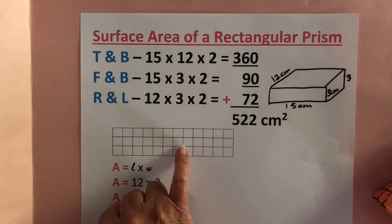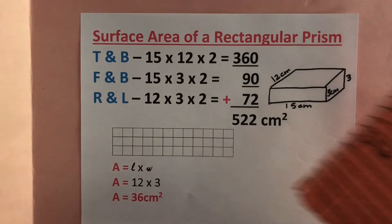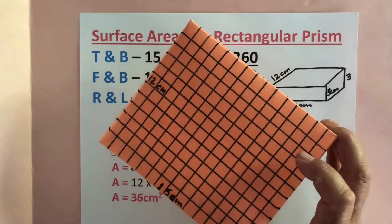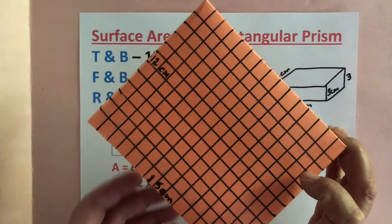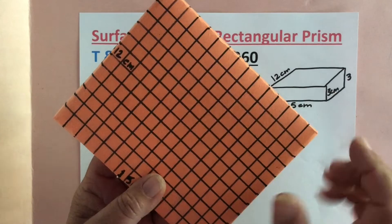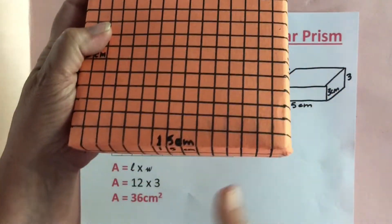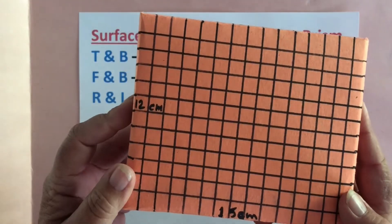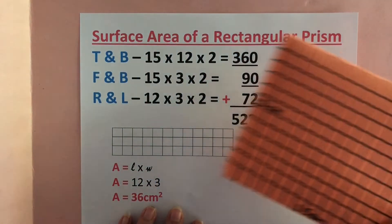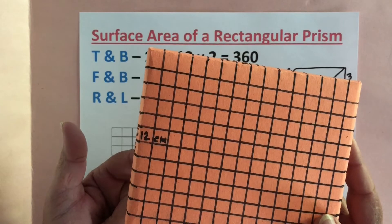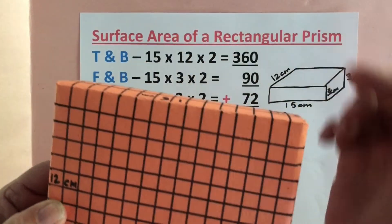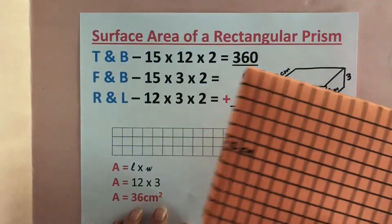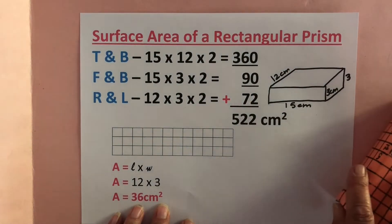The only difference is that we're doing it for a rectangular prism, and a rectangular prism is not a flat two-dimensional shape but rather a three-dimensional shape. It actually has six faces — a top and a bottom, a front and a back, and a right side and a left side. So what we're going to do is calculate the top and the bottom, since they're exactly the same, then the front and the back because they're the same, and the right and the left, which are exactly the same. We'll add all of those up to find the total surface area.